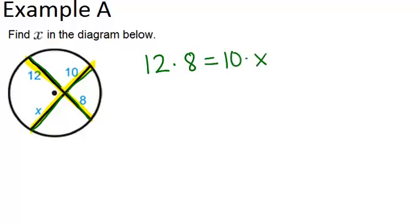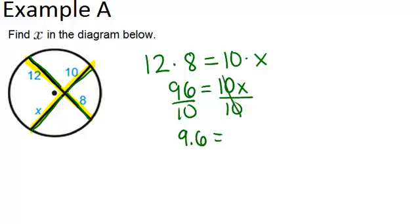So now we can solve this equation for X. We have 96 equals 10X, and once you divide by 10, you get 9.6 equals X.